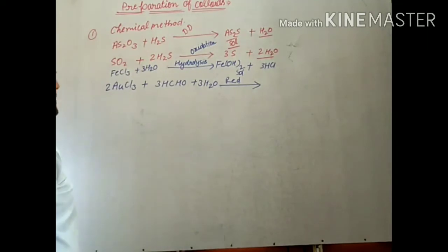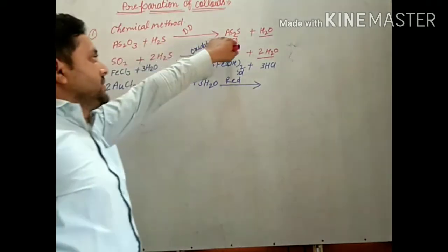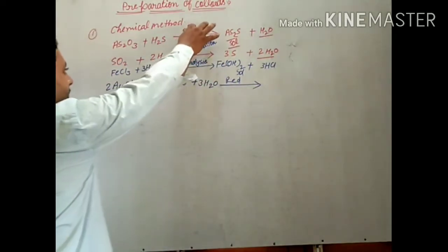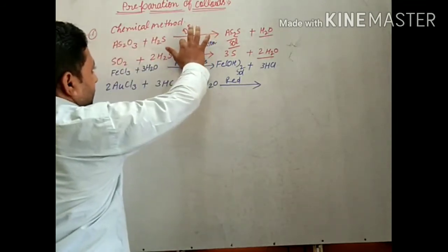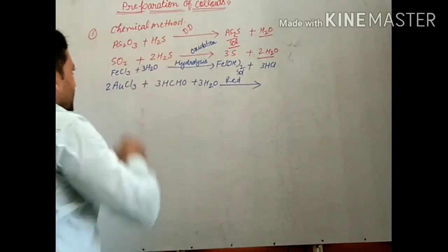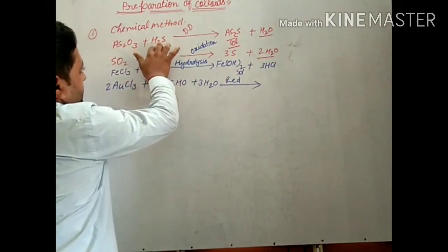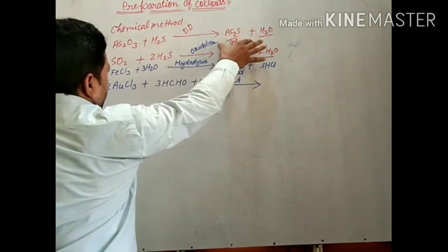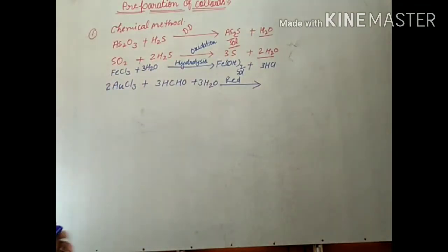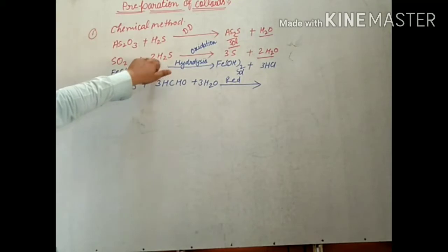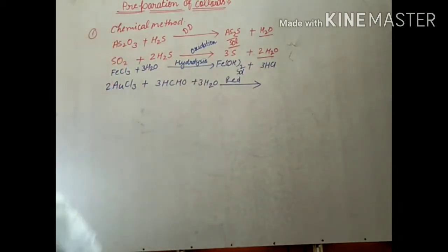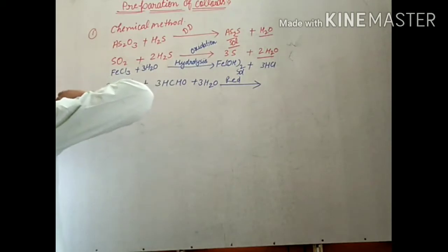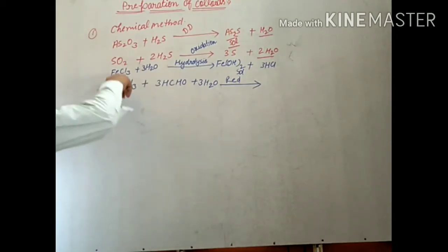Now in chemical methods, when AS2O3 reacts with S2S it forms AS2S3 salt plus water. This is called double decomposition. So by chemical reactions they are prepared by double decomposition: AS2O3 reacts with S2S and it forms AS2S3. Next is hydrolysis: FeCl3 plus 3H2O gives Fe(OH)3 plus HCl.